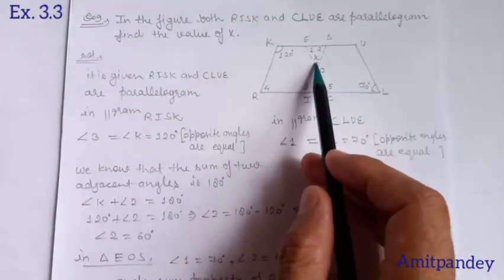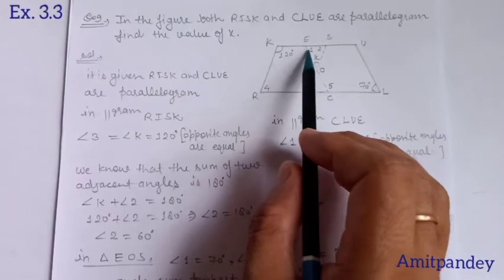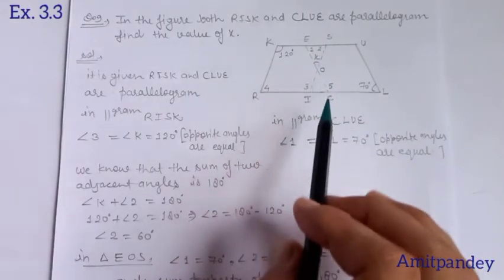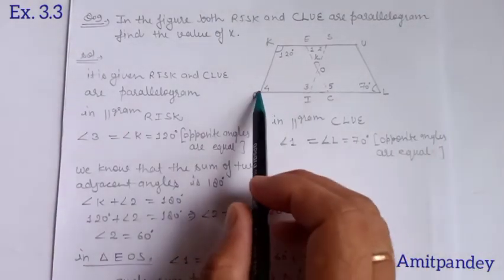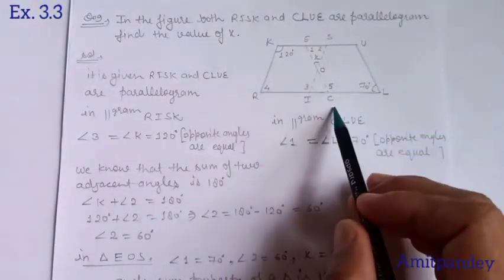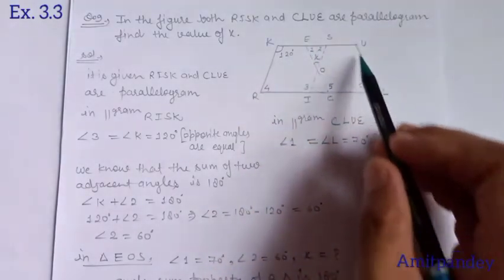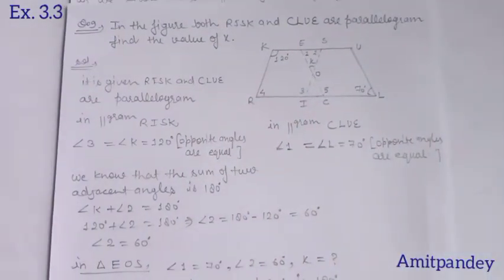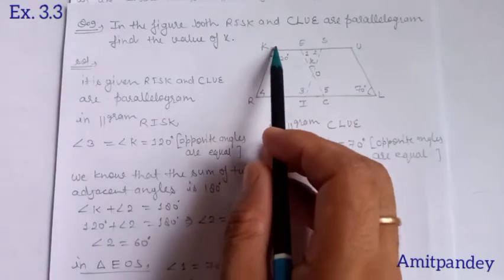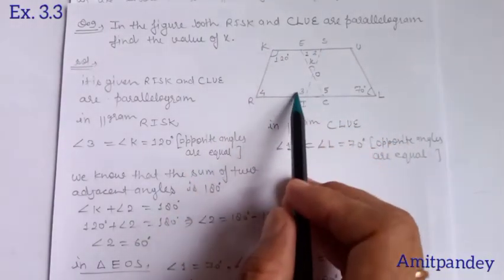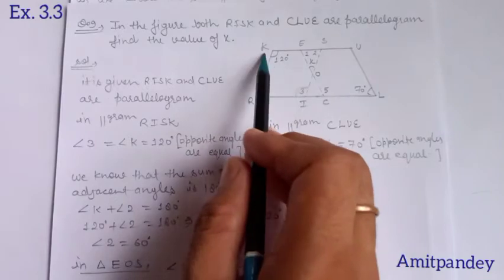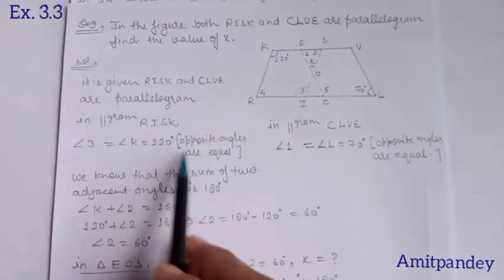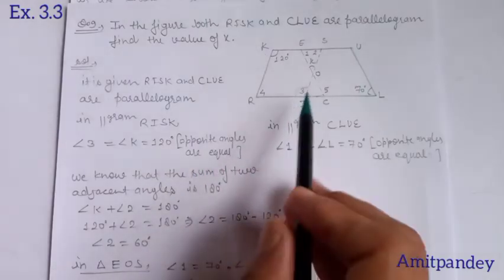X is this angle shown. You have to find its value. The angles labeled 1, 2, 3, 4, and 5 are not given in the question — we assign them for our calculation. RISK (R-I-S-K) is one parallelogram and CLUE (C-L-U-E) is another. In parallelogram RISK, angle 3 is opposite to angle K which is 120°. Since opposite angles are equal, angle 3 equals 120°.